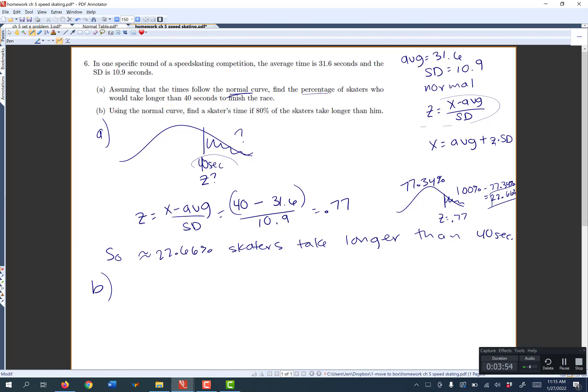Part B is the opposite. It says using the normal curve, find a skater's time if 80% of the skaters take longer than him. So that means now we know that this area to the right is 80%. Which now that I drew that, I think, oh wait, that's probably not very much to scale. I want 80% to the right. So 80% to the right. And I want to figure out what time is going to have 80% to the right.